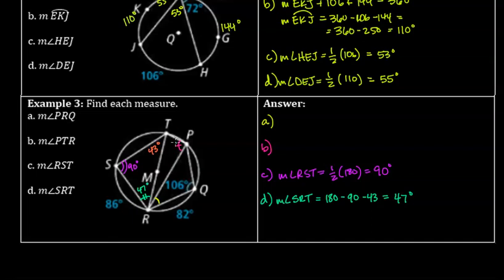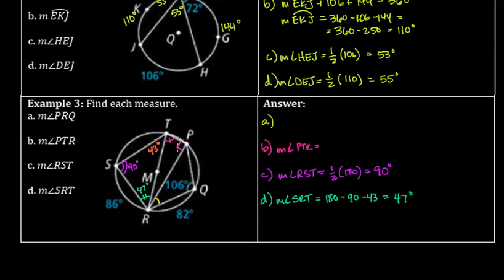Looking at this angle, it also appears to intercept a semicircle. The endpoints of the intercepted arc are T and R, and arc TR is a semicircle, giving a 90° angle there. Let's focus on angle PTR, which intercepts an arc that includes the 82° portion, but I still need to find the unknown part of that arc.